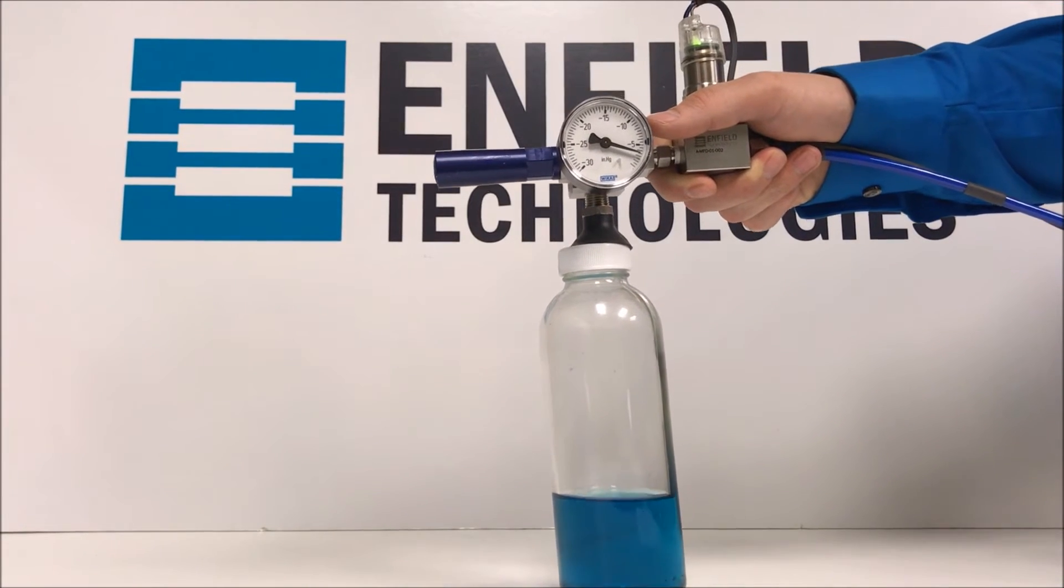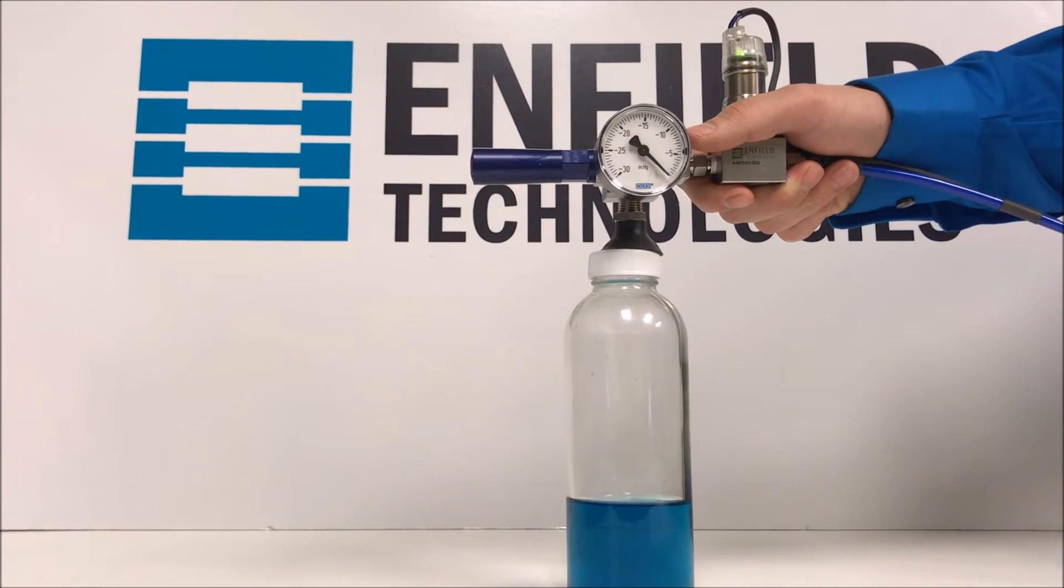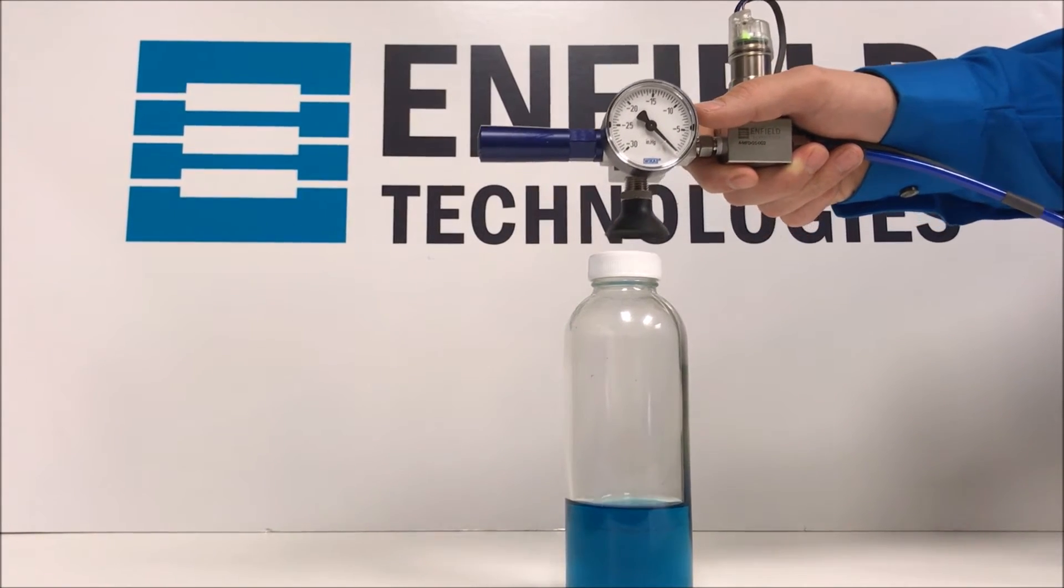Then, when lowering the bottle back down, we can slowly decrease the flow to the ejector, gently setting the bottle down.